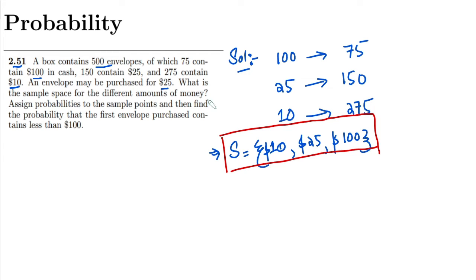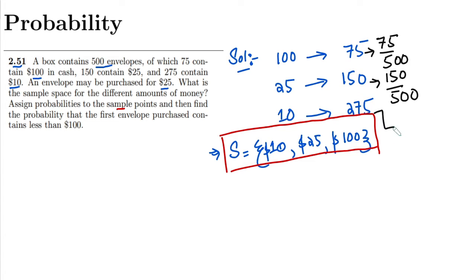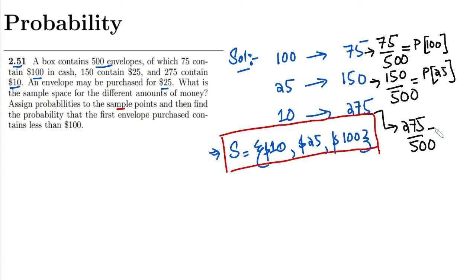Now we have to assign probabilities to the sample points. The probability for $100 is 75 divided by 500, the probability for $25 is 150 divided by 500, and the probability for $10 is 275 divided by 500. These are the probabilities associated with each of the envelope amounts.